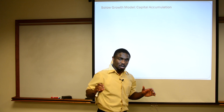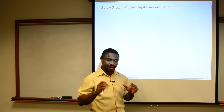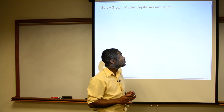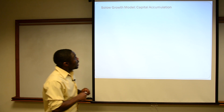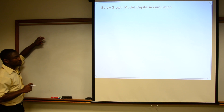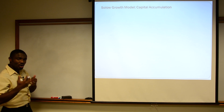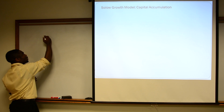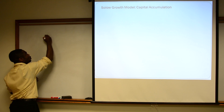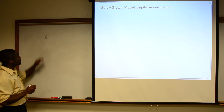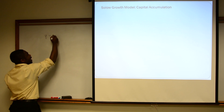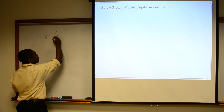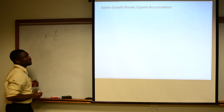Solow's growth model can be summarized essentially in one graph. To do so, we're going to think about our values on a per labor unit basis. So for instance, we're going to think about our output per person — small y — as our total output divided by our labor units.